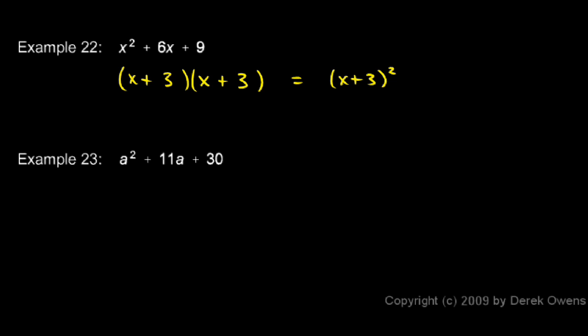Now let's look at example 23. A squared plus 11a plus 30. We'll factor this as a plus something times a plus something. And those two somethings have to add up to 11 and multiply to 30.